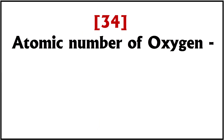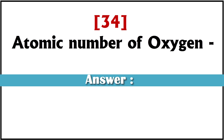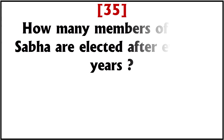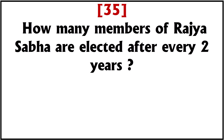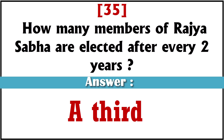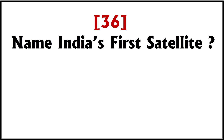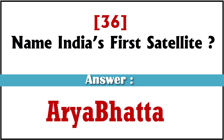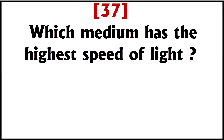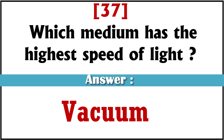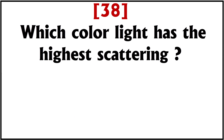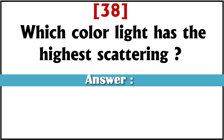Atomic number of oxygen? 8. How many members of Rajya Sabha are elected after every two years? 8. Name India's first satellite. Aryabhata. Which medium has the highest speed of light? Vacuum. Which color light has the highest scattering? Violet.